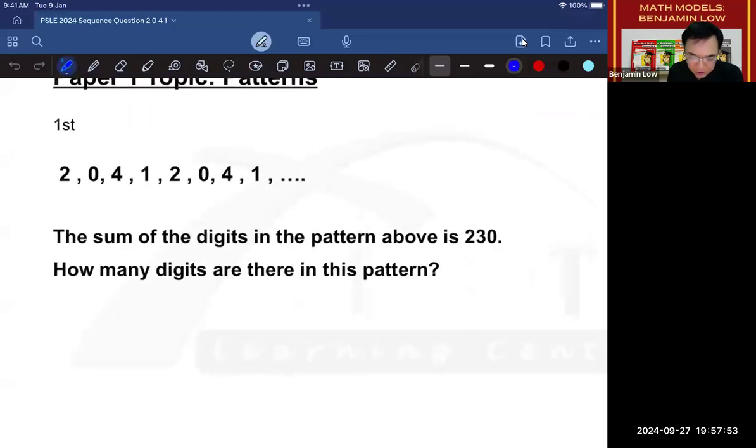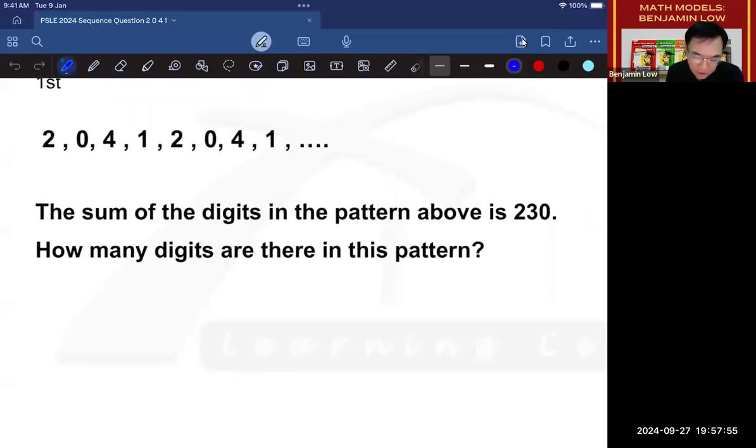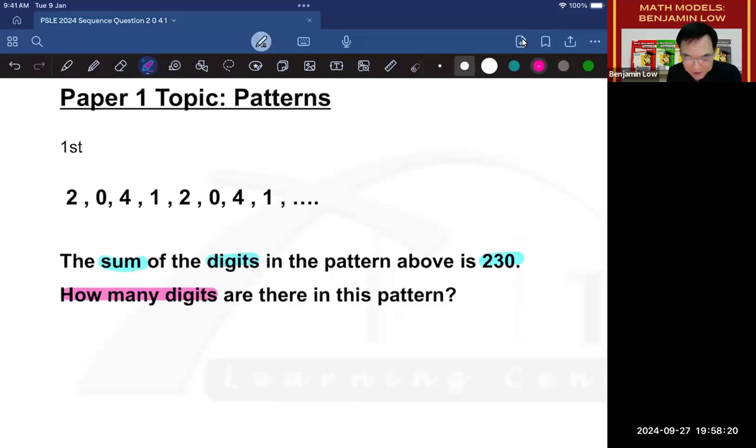As you can see here, the question states that there is a sequence of numbers in this order: 2, 0, 4, 1, 2, 0, 4, 1. Now, it says that the sum of the digits in the pattern above is 230. And the question is, how many digits are there in this pattern? It's always a good idea to underline your keywords.